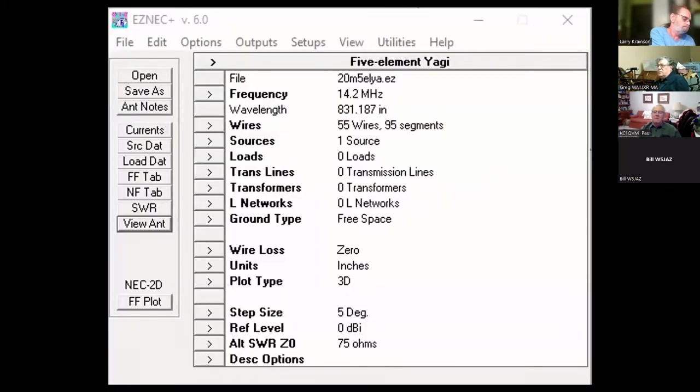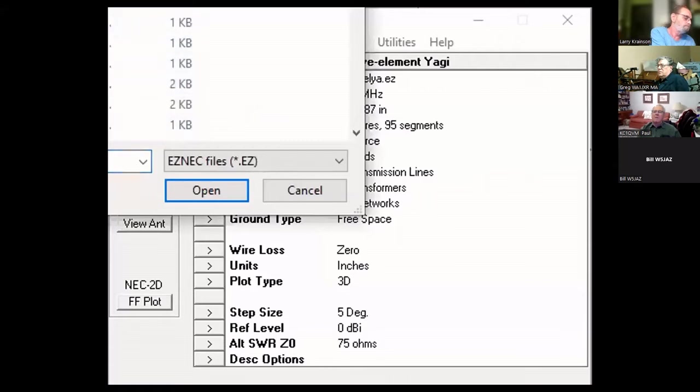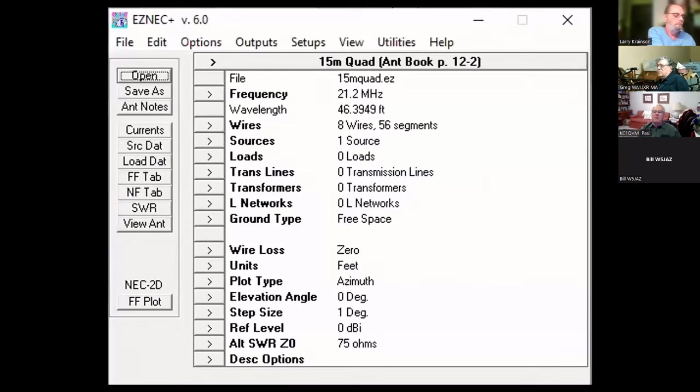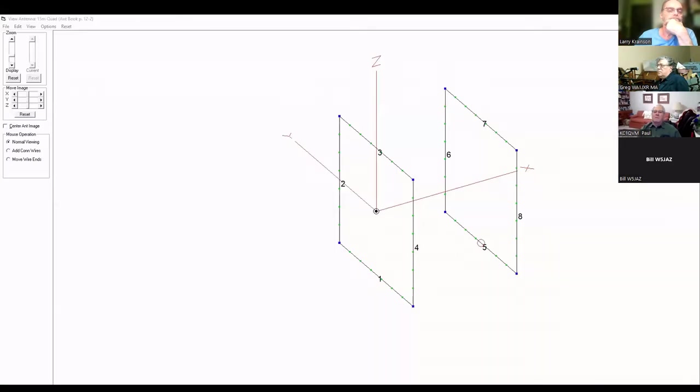Let's go back and look at other models. Here's a two-element quad. Let me share that with you. Here you see the two-element quad. Each quad loop is made out of four wires. You have the driven element loop here with the source down at the middle of the bottom wire, and the reflector element here on the other side.